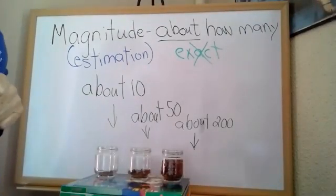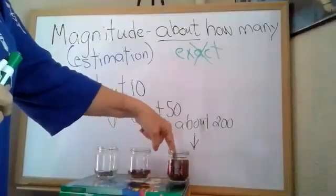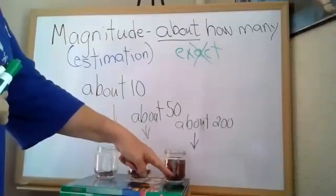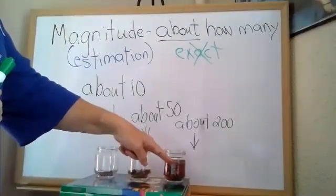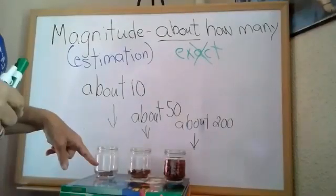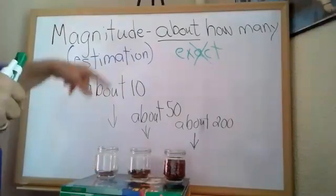Which one do you think has the most beans in it? Yes, this one here, because how could we tell? This one has a lot more, so it has more. Which one has less? Yes, this jar right here has less.